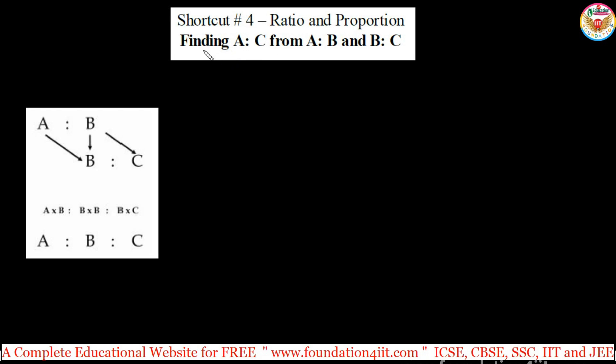In ratio and proportion, let us see another type of shortcut here, finding A is to C from A is to B and B is to C. This is a simple technique you can apply. I will show once.